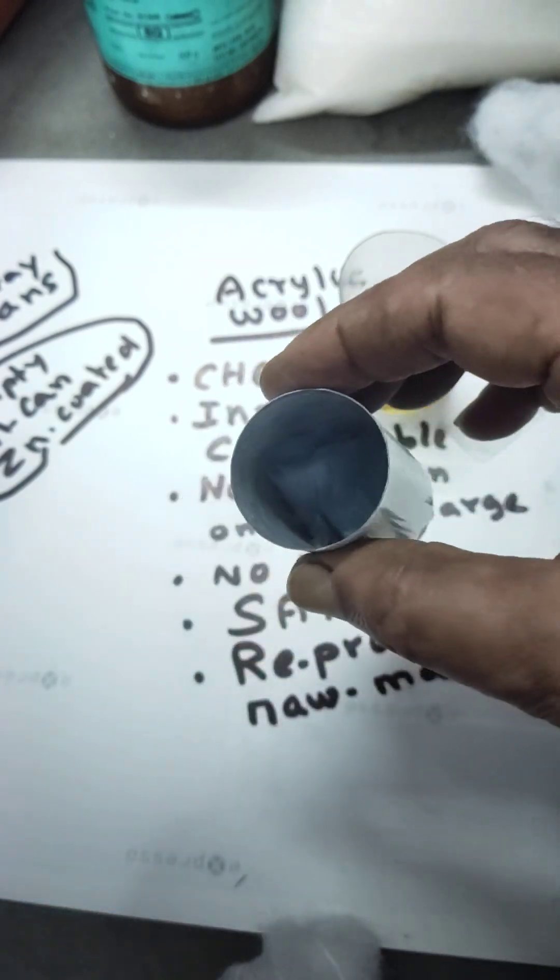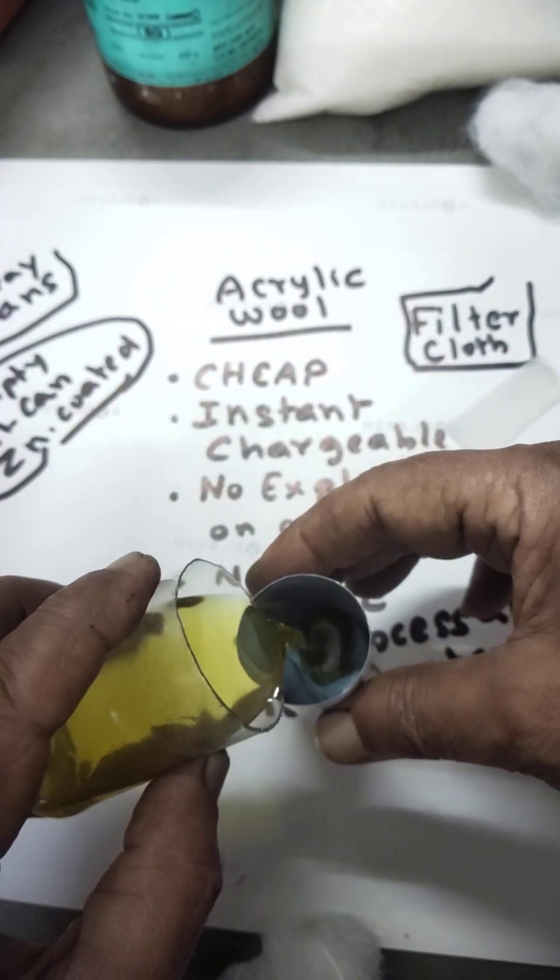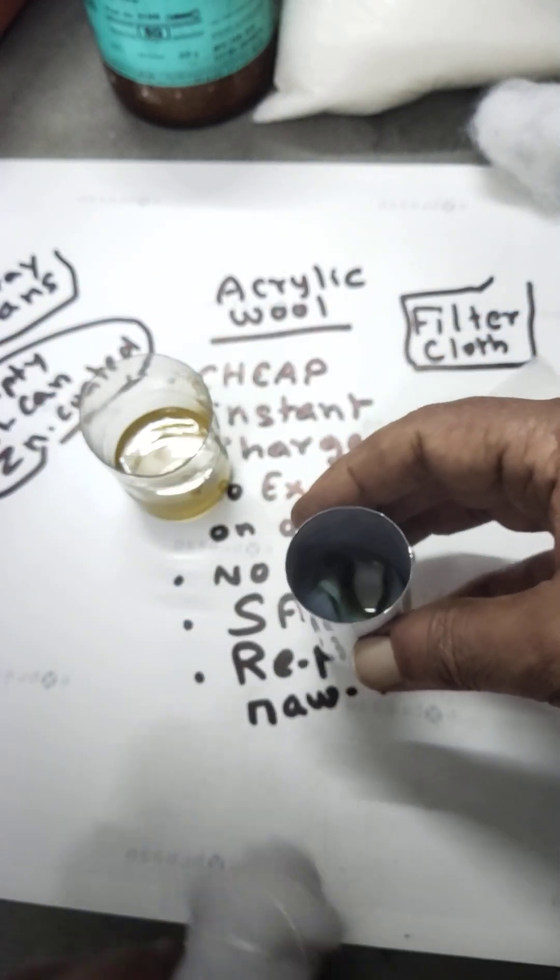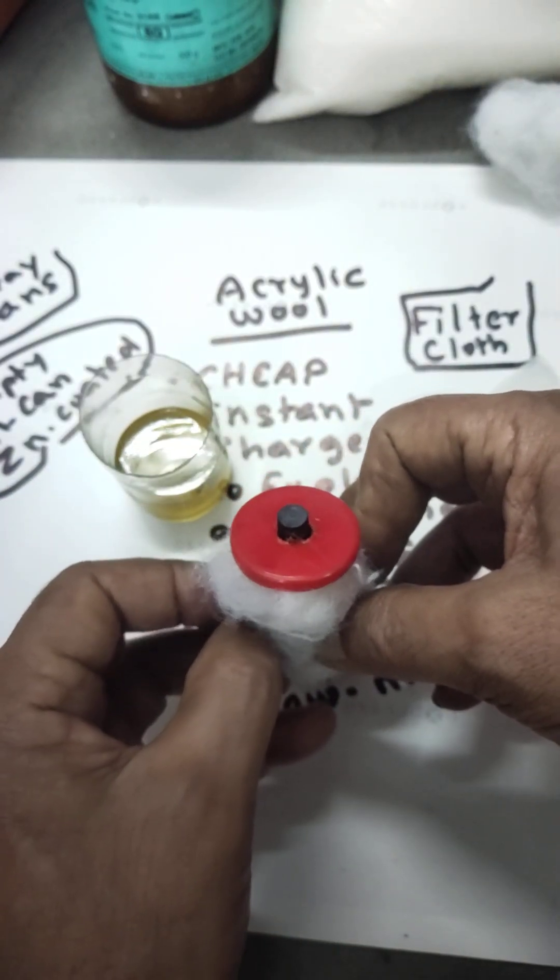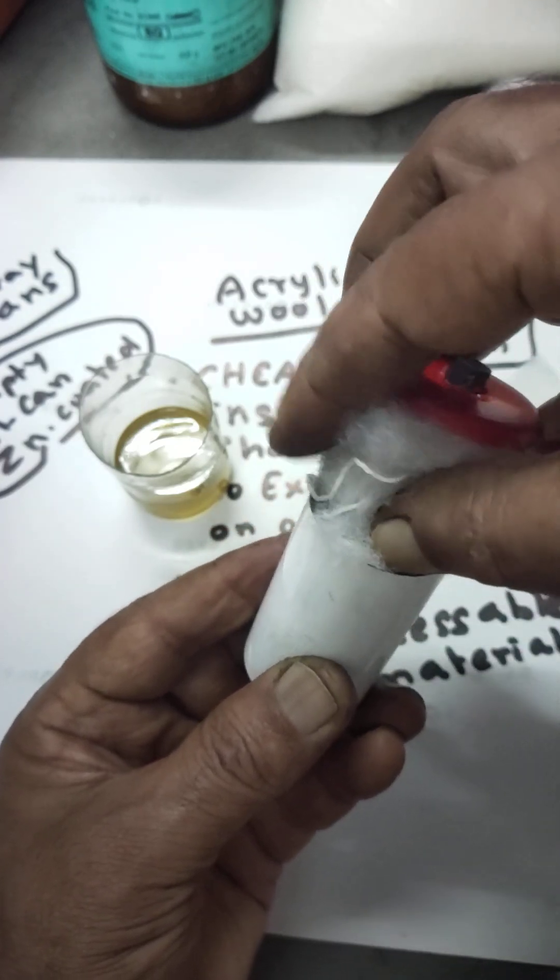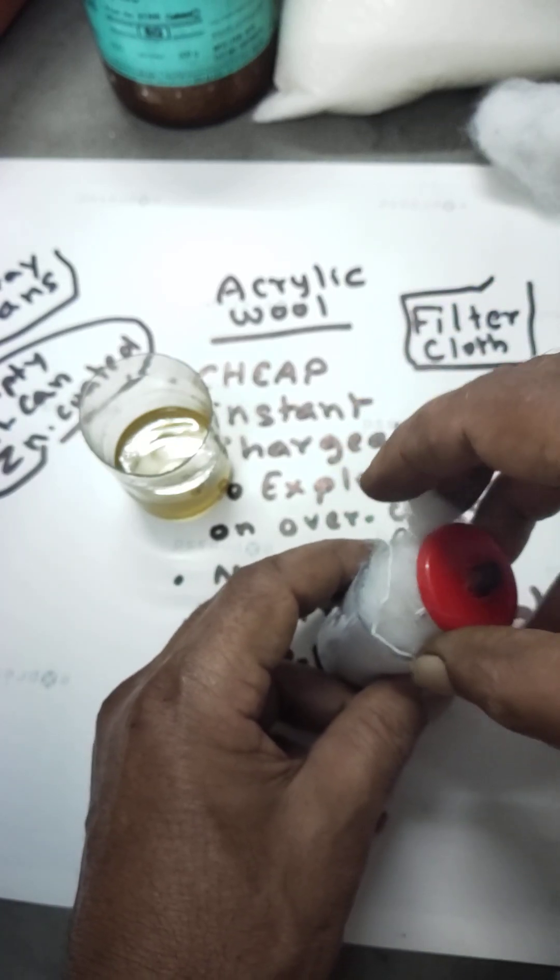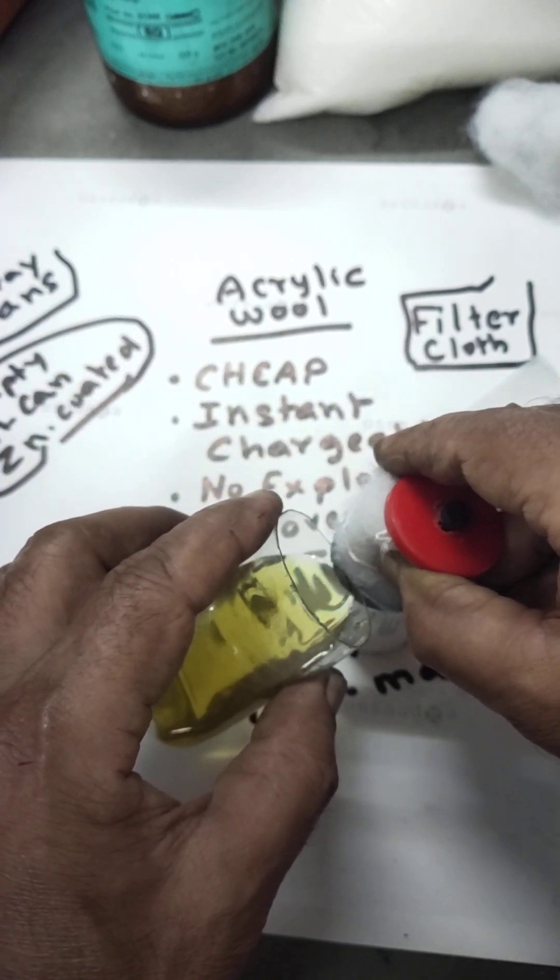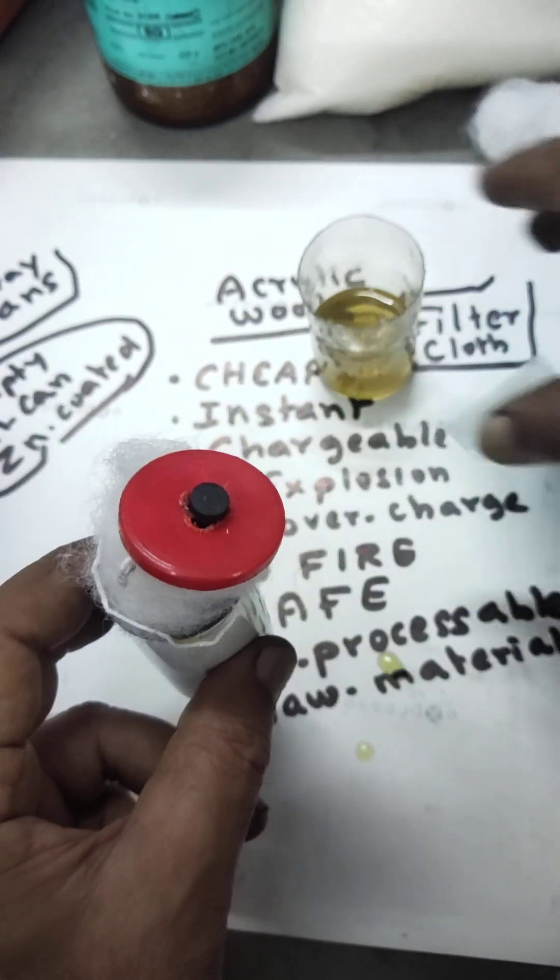Now I've placed it inside. Then I'm going to slowly pour this electrolyte into it. It's filled. Then I'm going to insert this electrode slowly. You're able to see it.